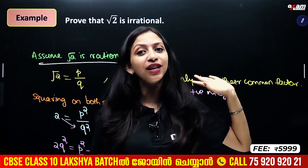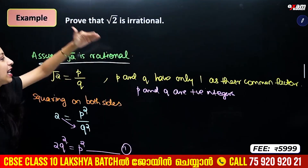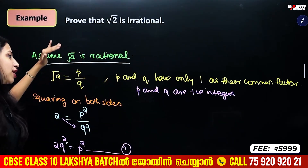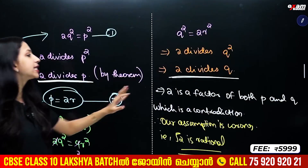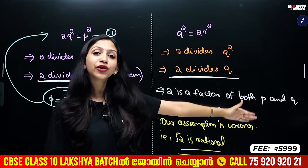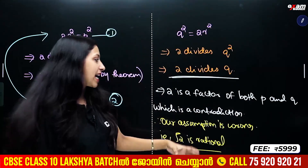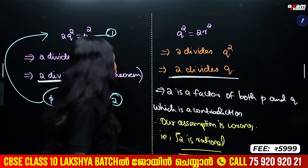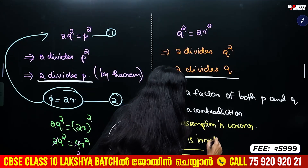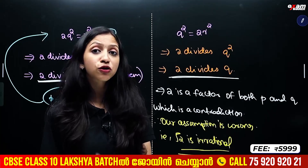Because we assumed the opposite of what we wanted to prove, and we reached a contradiction, our assumption must be wrong. Therefore, the correct conclusion is that root 2 is irrational.